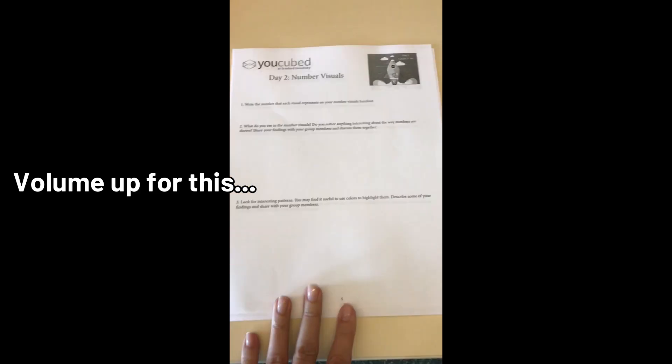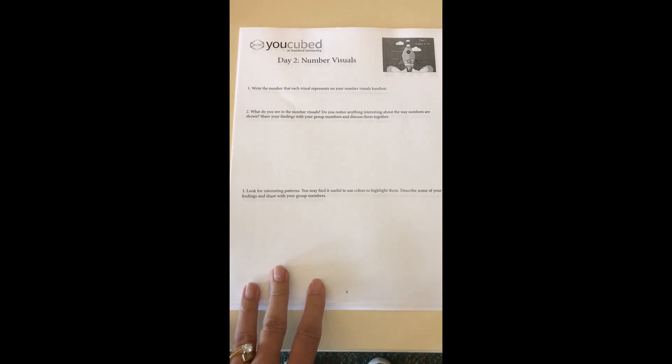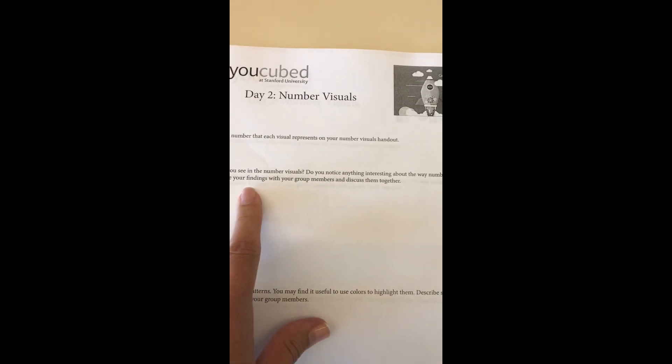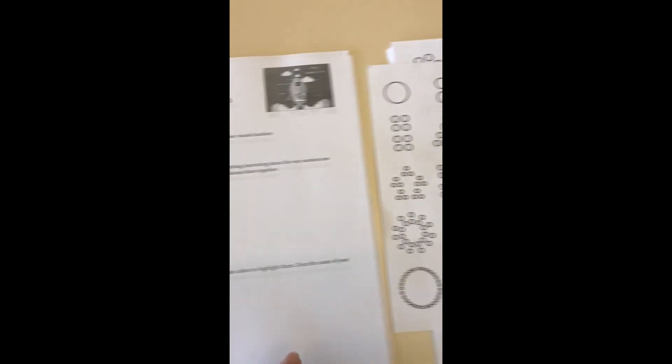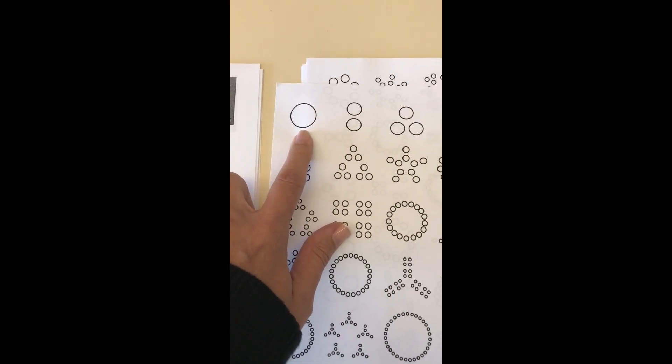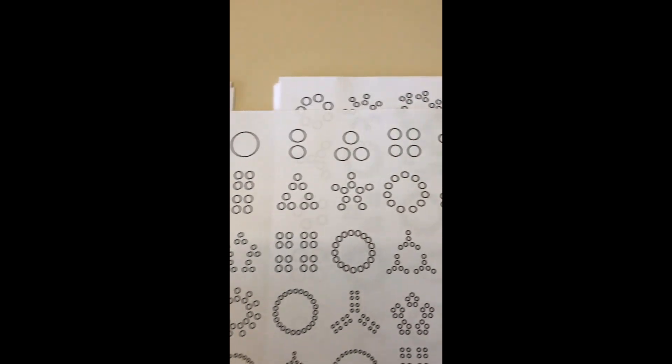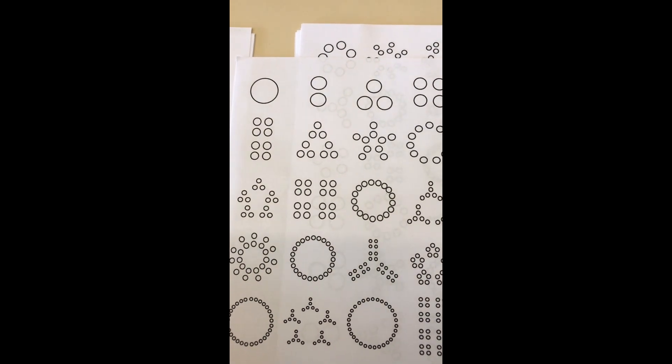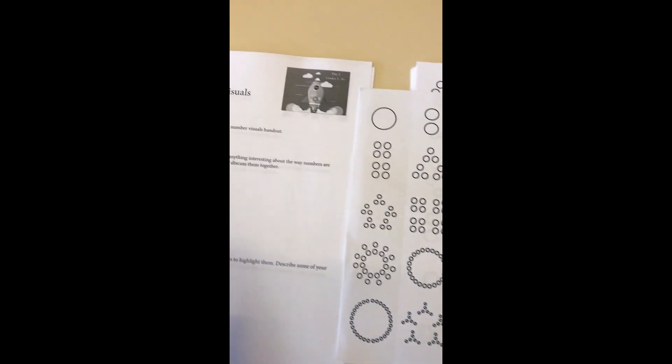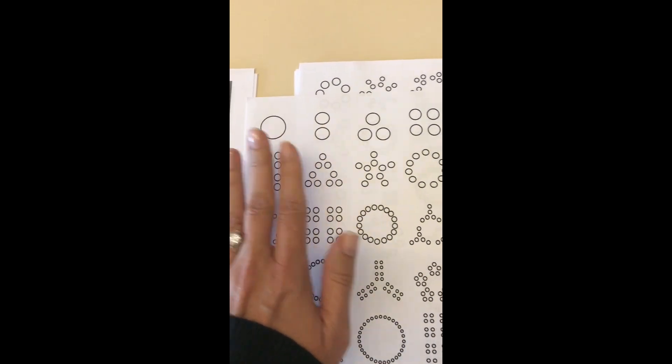For one of my math classes today, my sixth grade advanced class, we did Jo Boaler's YouCubed number visuals activity. The first question says write the number that each visual represents on your visuals handout and this is the handout. It's really interesting to watch students because I did not give them much direction at all on purpose. I wanted to see how partners work together and how they interpreted the directions.